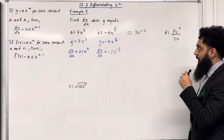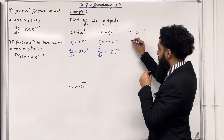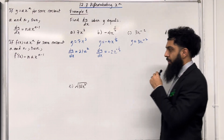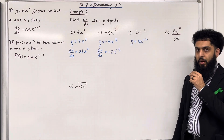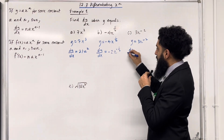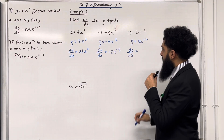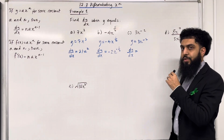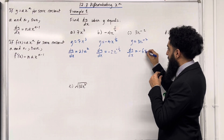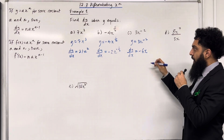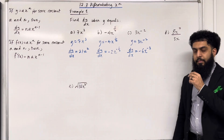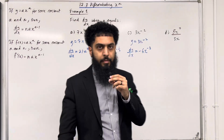Let's have a look at part C. We've got y equal 3x to the power minus 2. We want to work out dy over dx. So dy over dx equals — bring down the power: minus 2 times 3 is minus 6, x to the power minus 2 minus 1, which is minus 3. This completes part C.